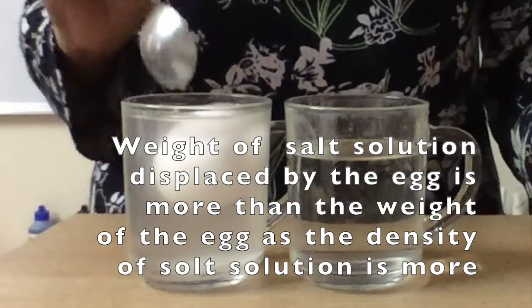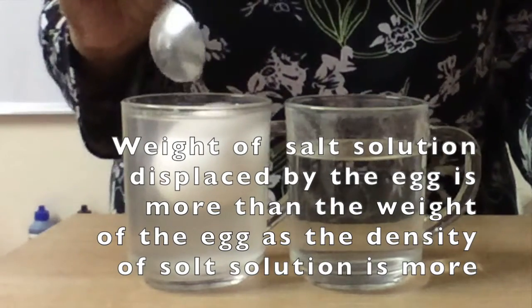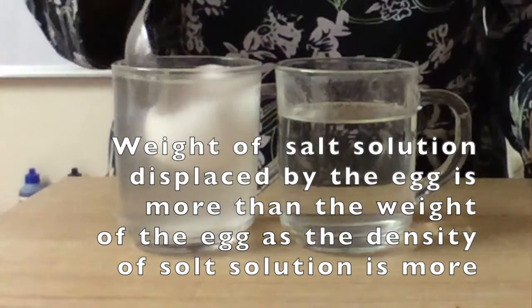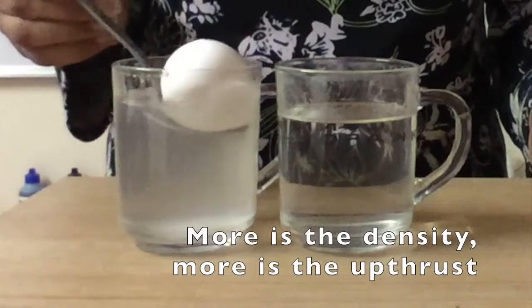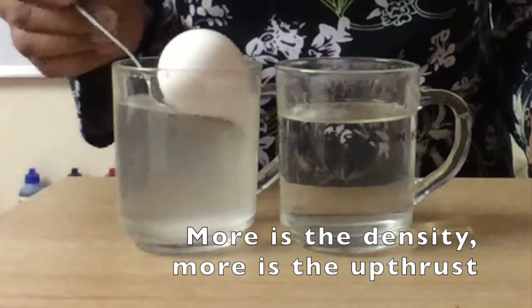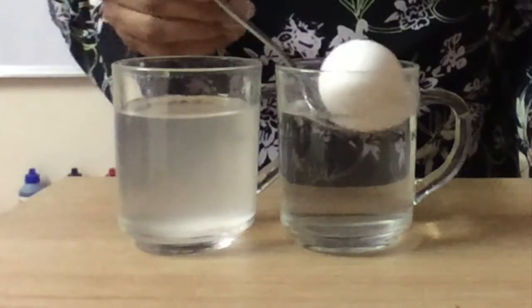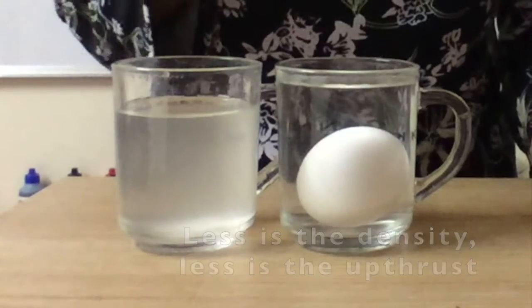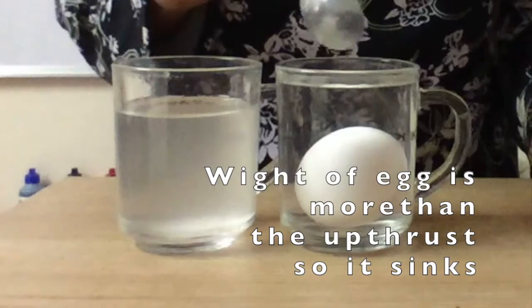And remember the weight of the liquid displaced by the immersed part of the body, that is the upthrust. We have learnt that already. So understand that more the density, more is the upthrust. Back again, less density, less upthrust. So the weight being more than the upthrust, the egg sinks.